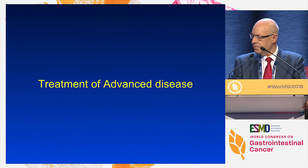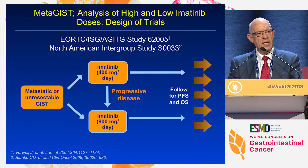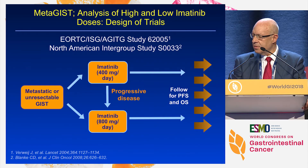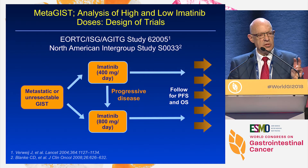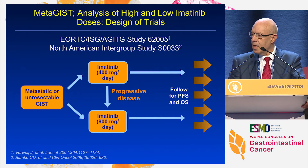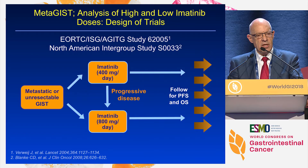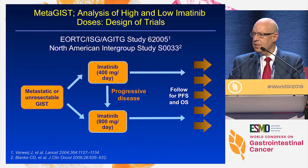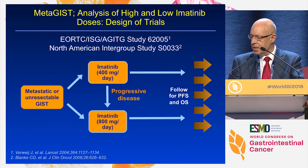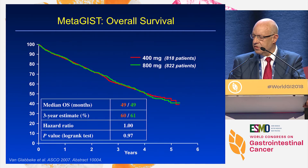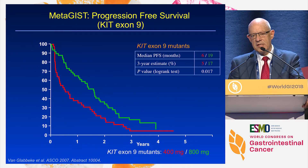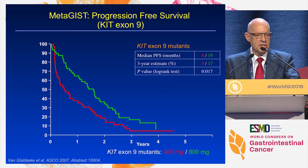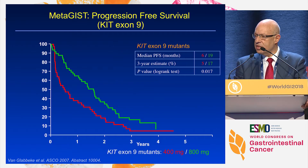Just to remind everyone where we've got to with advanced disease — these were the two pivotal studies done by the North American group and the European, Australasian, and Scandinavian groups, comparing 400 mg/day to 800 mg/day of imatinib. There was no difference in overall survival, which led to 400 mg becoming standard. However, in the exon 9 group, there is a suggestion that at least in terms of progression-free survival, they do better with a higher dose.